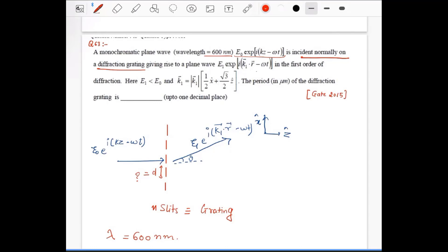This gives rise to a plane wave in first order of diffraction, propagating in the direction of k1. What is the period of diffraction grating? First, you have to understand what is diffraction grating. Similar to a double slit, if you extend the slits to n numbers, then it will become a grating.